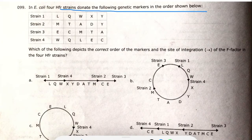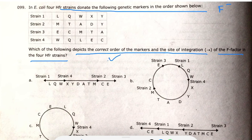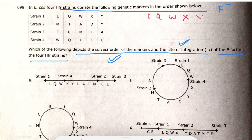Next question: in E. coli, four HFR strains donate the following genetic markers in the order shown. Which one depicts the correct order of markers and the site of integration of the F factor in the four HFR strains? HFR strains donate genetic markers to F-minus strains. The site of integration will be just before the first gene transferred. Gene order for strain one is: L, Q, W, X, Y.